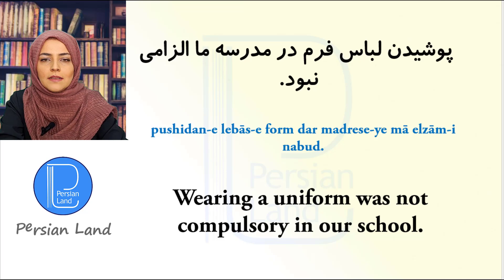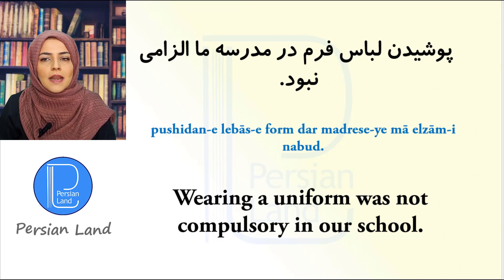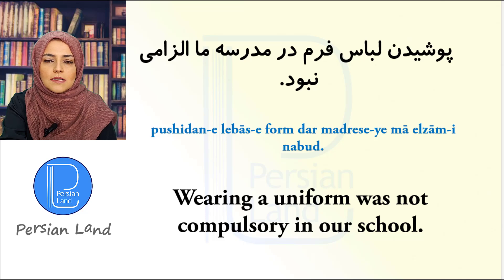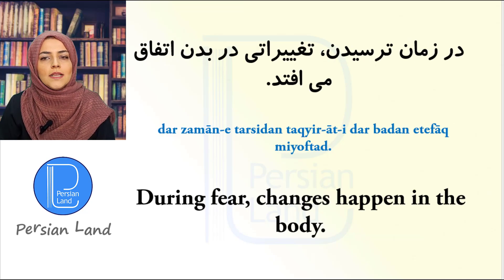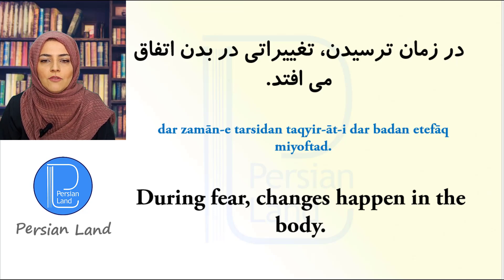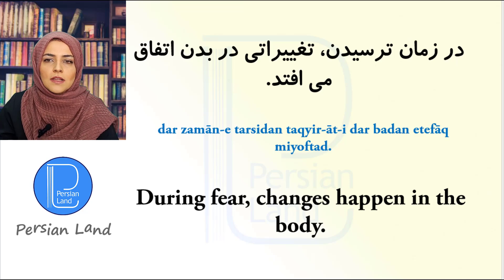پوشیدن لباس فرم در مدرسه ما الزامی نبود. پوشیدن is the gerund. پوشیدن لباس فرم means 'wearing a uniform'. الزامی means 'compulsory' — الزامی نبود means 'was not compulsory'. در زمان ترسیدن تغییراتی در بدن اتفاق می افتند. در زمان ترسیدن means 'when fearing / during fear'. تغییراتی means 'changes'. اتفاق افتادن — again a compound infinitive — means 'to happen'.